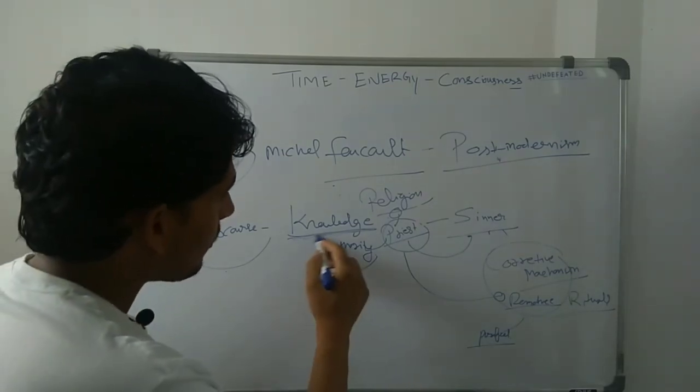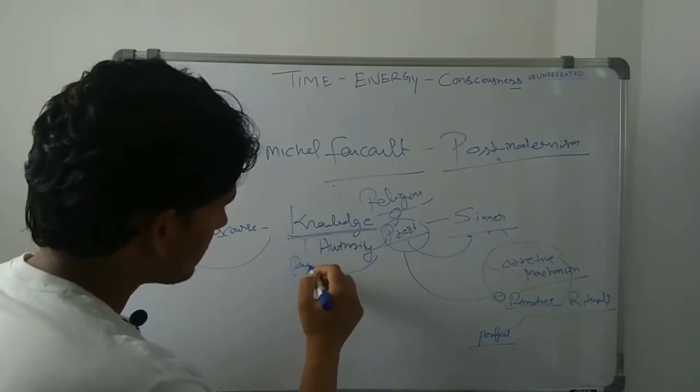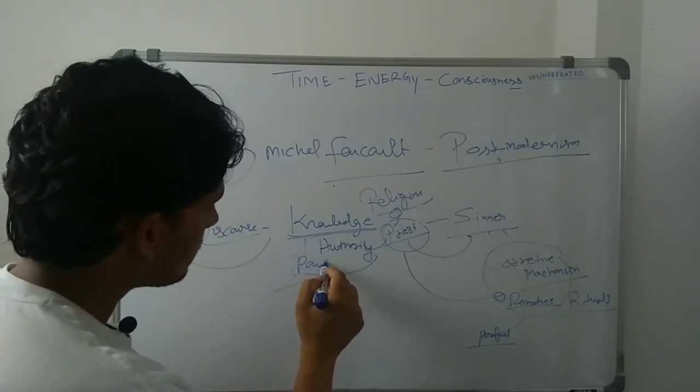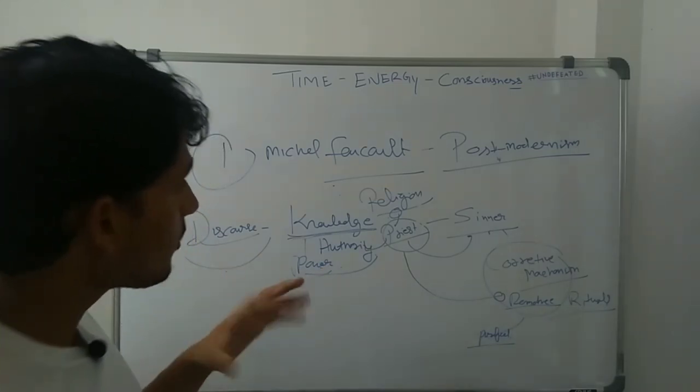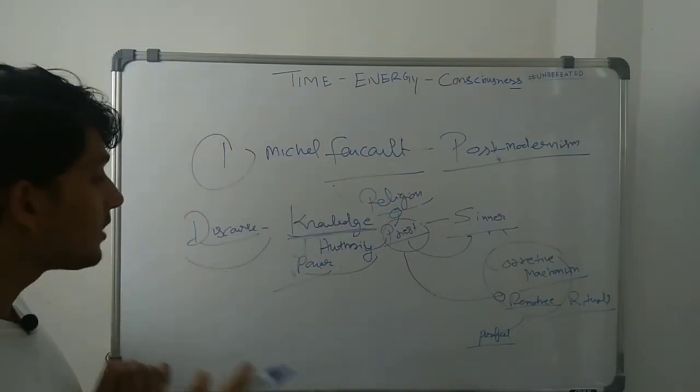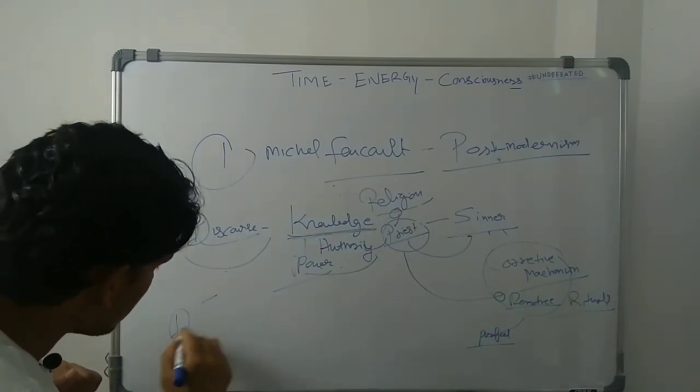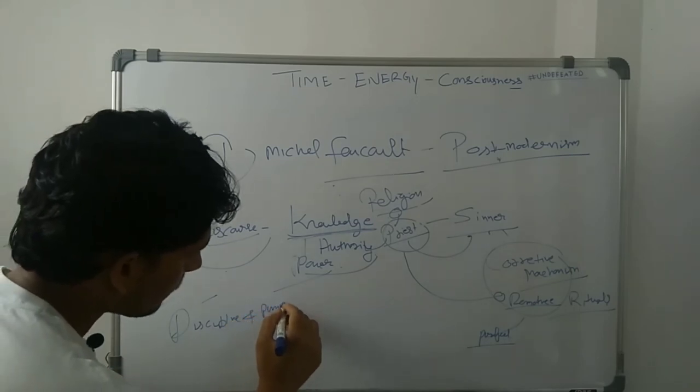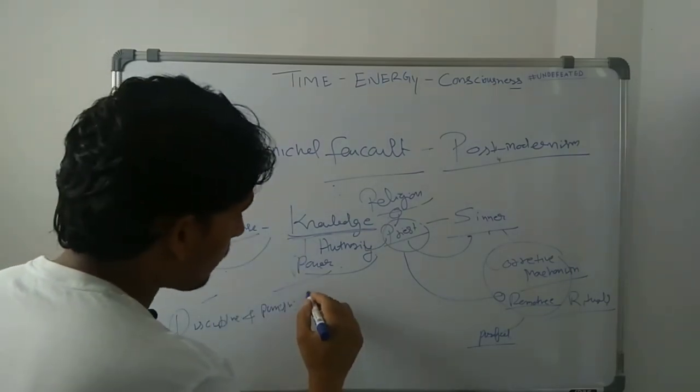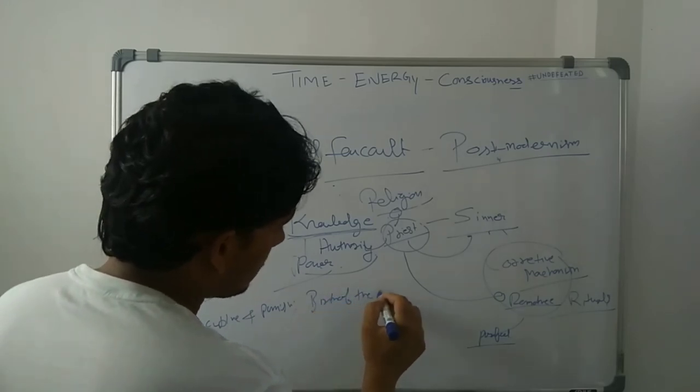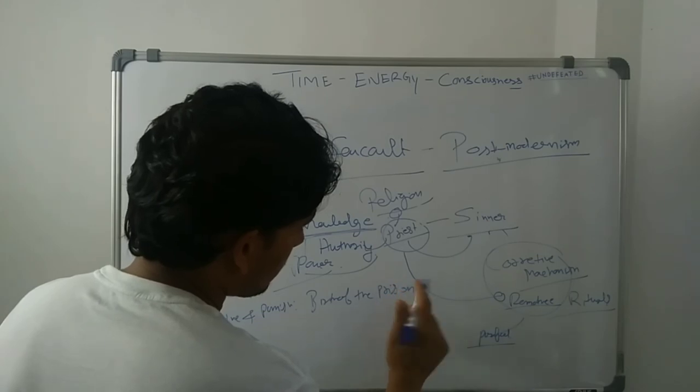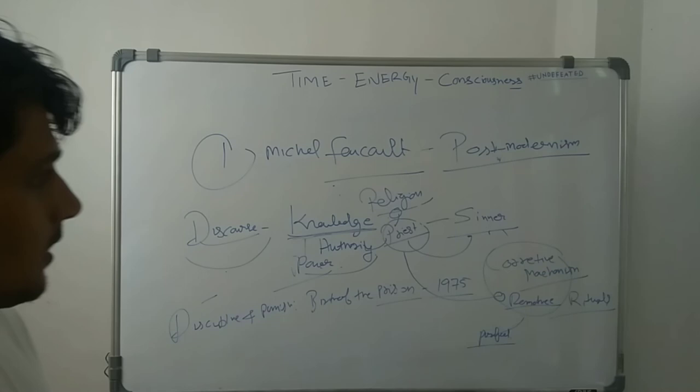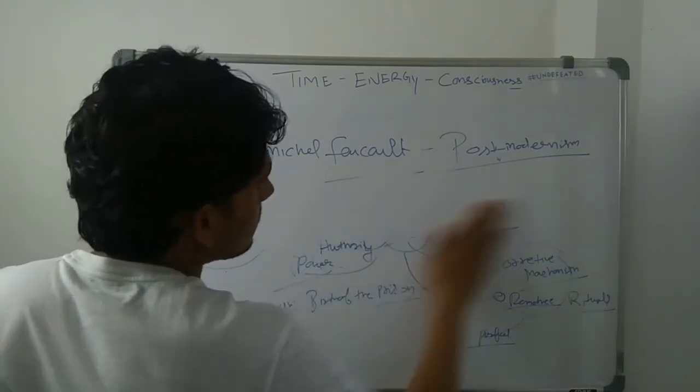So now the knowledge and the power concept is clear for you. The concept of discourse is clear for you. These are the very important concepts which he has propounded. And these concepts are propounded in his work called Discipline and Punish, it is called the Birth of the Prison, published in 1975. All right, now let's talk about the other...